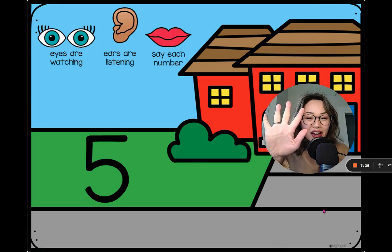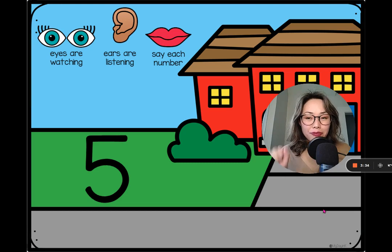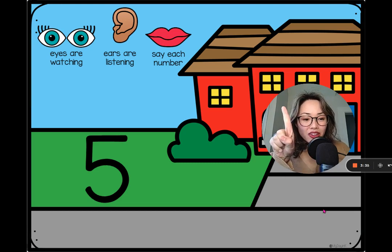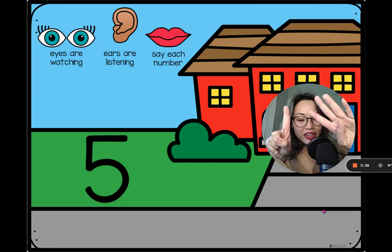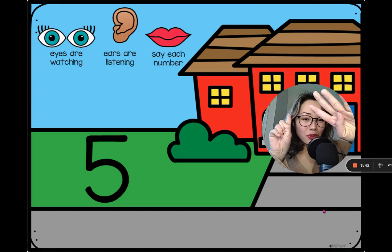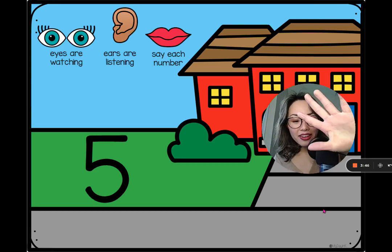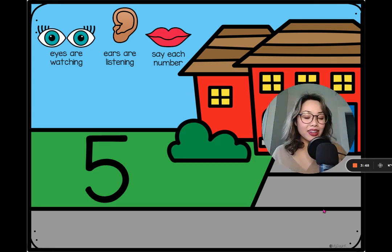And then I would ask students, can you show me five a different way? So the students might put one on one hand and then four more on the other hand. And then I'd affirm one and four are partners to make five.